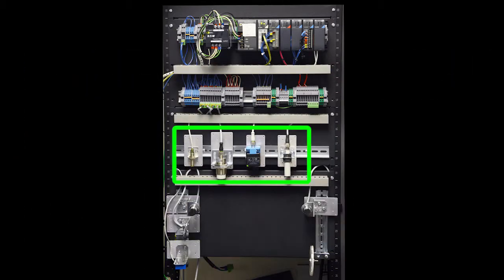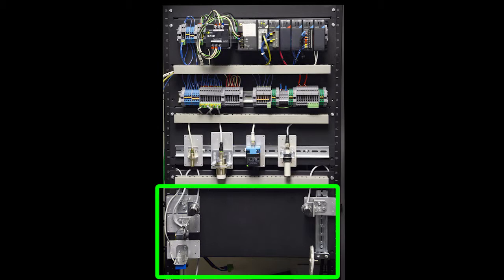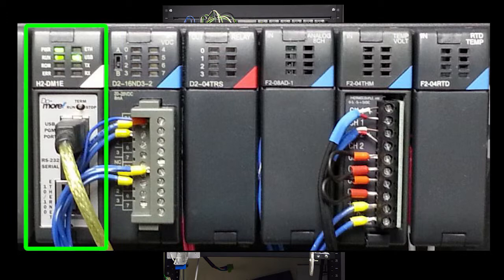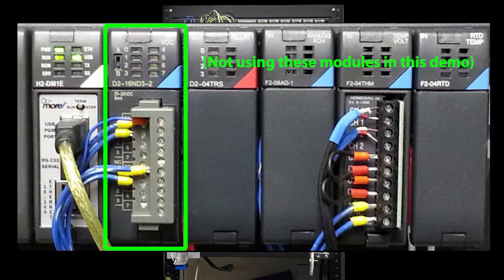First we'll connect the proximity and ultrasonic sensors and then we'll swap those out with the photo sensors. The Do-more has a four slot base with an AC power supply, the CPU, and a 16 point discrete input module.